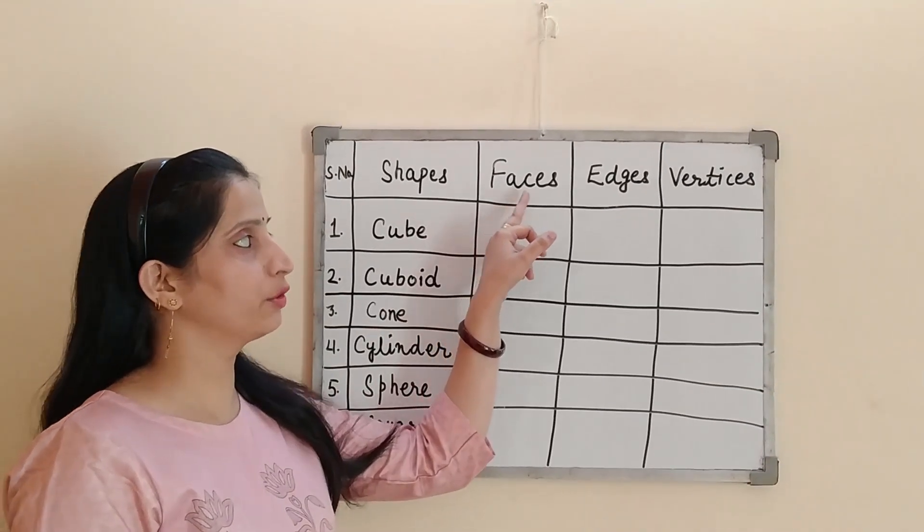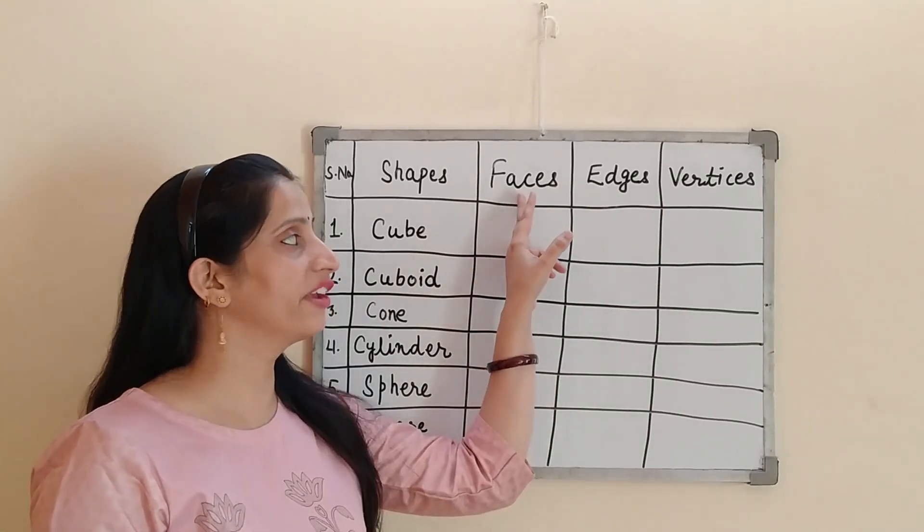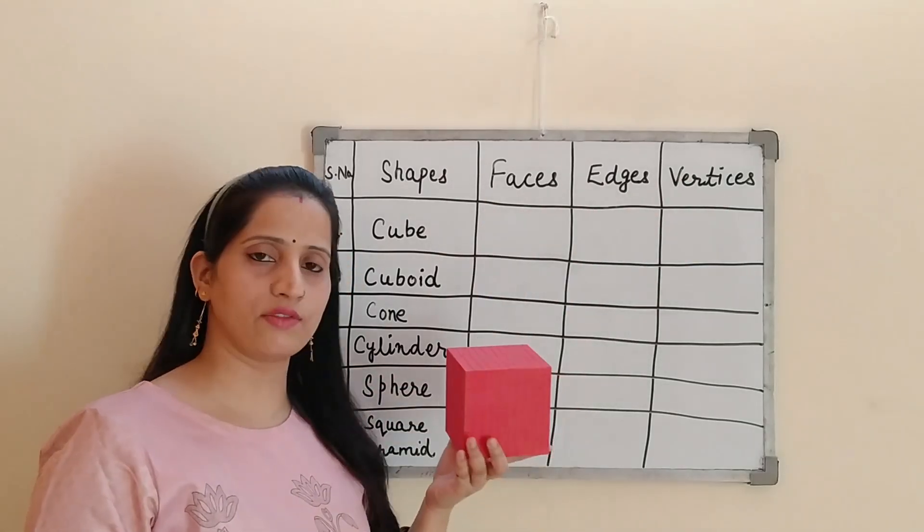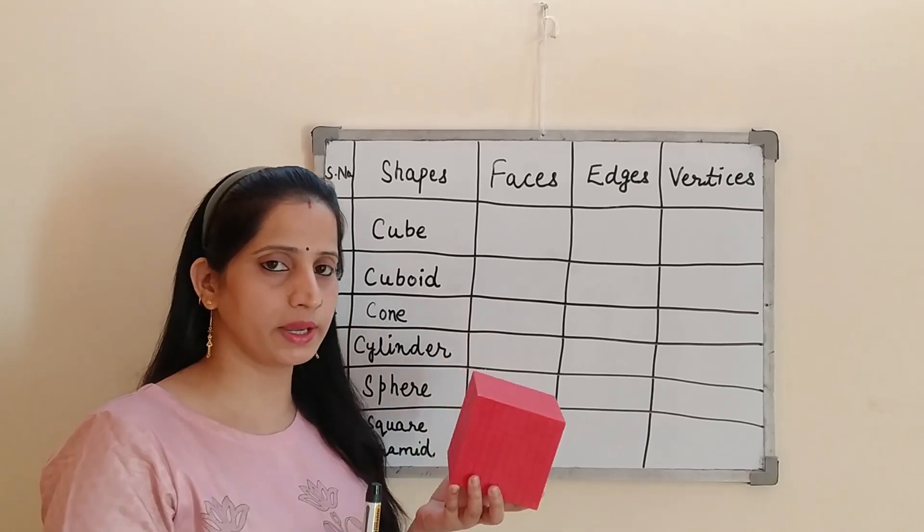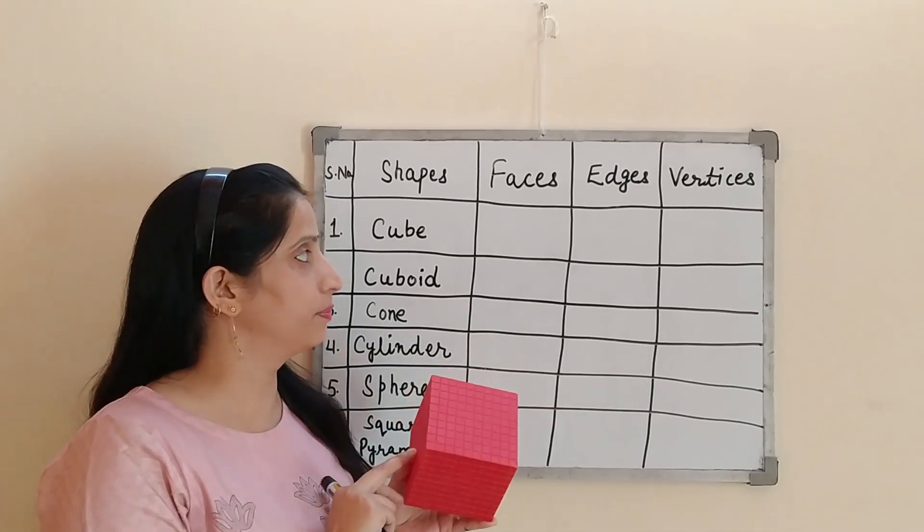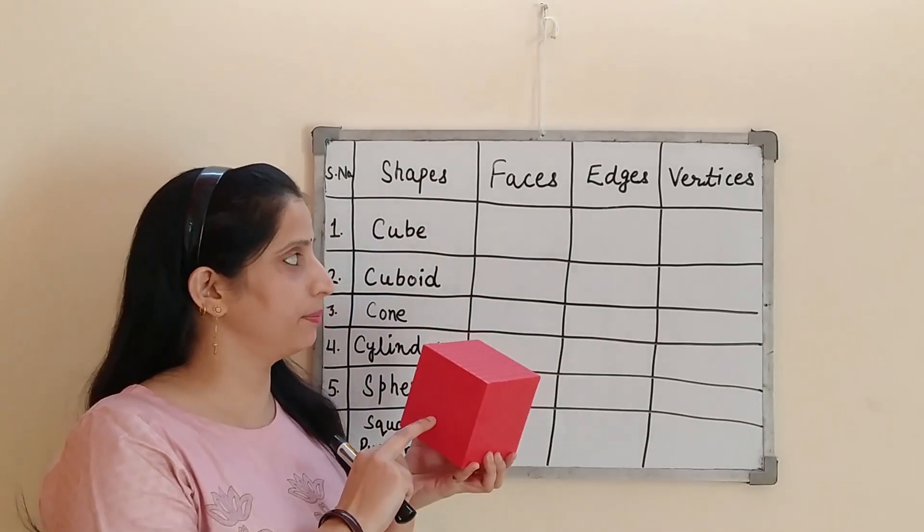Now let's talk about faces, edges, and vertices. First I am going to explain the meaning of face. See, I have a 3D shape in my hand. This is a cube. A cube is a 3D shape whose all the faces are square in shape. Face means a face is a flat surface of a 3D shape.